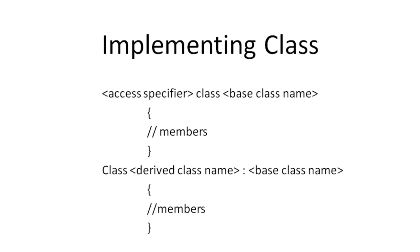Inheritance is an object-oriented programming concept and is widely used to share commonly used members of a class with another class or multiple classes. A class can inherit only from one class, while a class can be inherited by unlimited classes. The objects of the derived class get a copy of the data members and member functions of the base class by using inheritance.